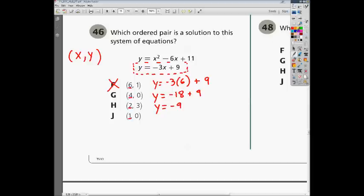Well, now we need to try the same thing with our next ordered pair. We have 4 and 0. So if we plug in a 4, we have y equals negative 3 times 4 plus 9. Well, negative 3 times 4 is negative 12. And then negative 12 plus 9 is negative 3. So when we plugged in a 4, we ended up getting out a negative 3. Well, we're supposed to get out a 0. So G also cannot be correct.